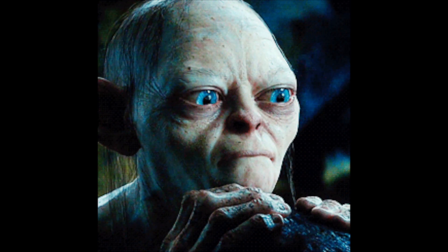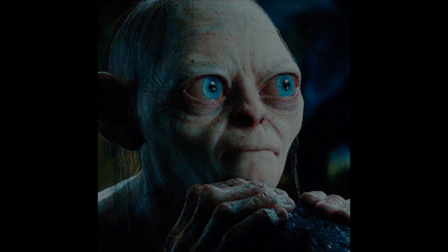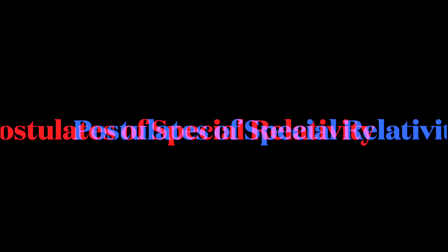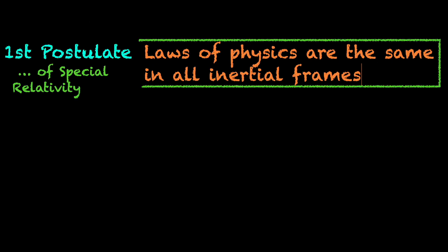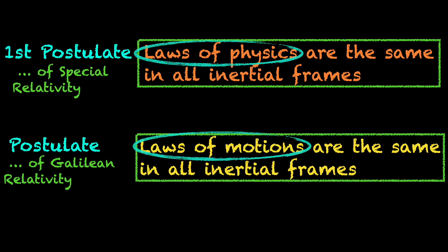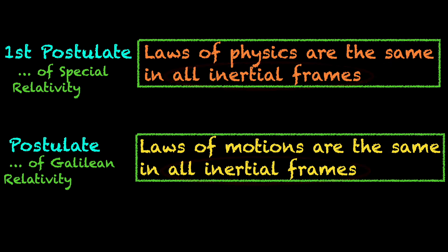One good place to start looking can be the postulates of special relativity themselves. Never hurts to go back to the basics, right? So what do they say? The first postulate is about the laws of physics being the same in all inertial frames. Nothing specific to light or the speed of light in here. Moreover, its content was in essence already there in the Galilean or Newtonian version of relativity, the pre-relativistic relativity so to speak.